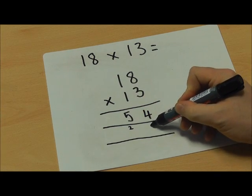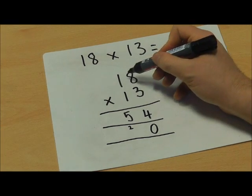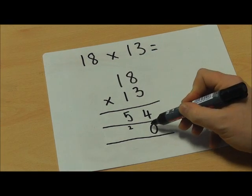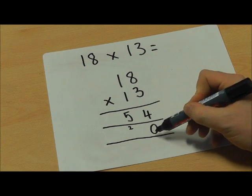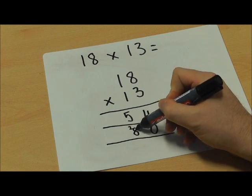So to indicate that I'm timesing by 10 I need to put a 0 there to show that everything I'm multiplying here is actually timesing it by 10. So I'm going to start by doing 8 times 1 which equals 8.